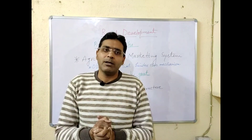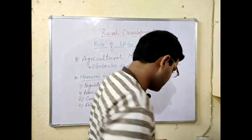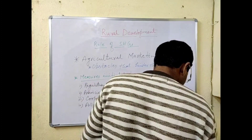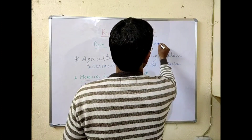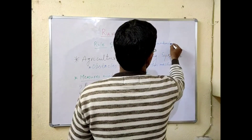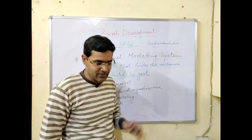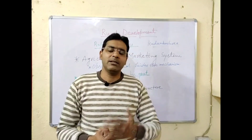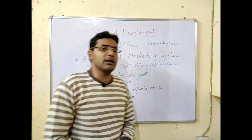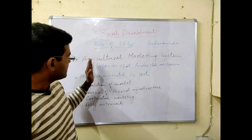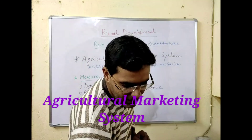Therefore SHGs are doing good work. One example is Kudumbashree in Kerala — it is a women-oriented community-based poverty reduction program implemented in Kerala in 1995. Through thrift and savings, when they pooled one crore rupees, these organizations have been claimed as Asia's largest informal banks. So SHGs are also playing a good role in rural development. Now after the credit system, we will talk about the agricultural marketing system.